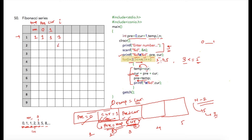In the second iteration, i is incremented to 4 and the condition 4 less than or equal to 5 is true. We store current into temp — current is 1, so temp becomes 1. Then we add the latest values of previous and current: 1 plus 1 equals 2, which is stored into current. In the third step, temp is assigned to previous, so previous becomes 1. After that i is incremented to 5.